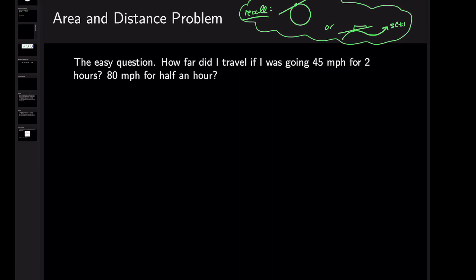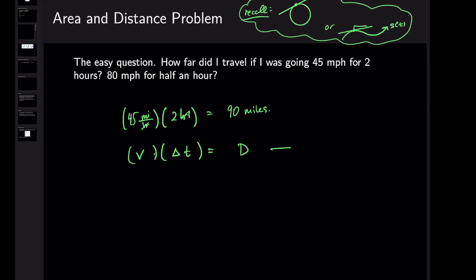How far did I travel if I was going 45 miles per hour for two hours? Don't overthink this — 45 miles per hour for two hours. This is a product of these two. You can even see that the units, hours, will cancel, and you'll be left with 90 miles. You might remember this formula from physics: velocity times the change in time gives you the total distance traveled.